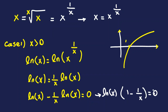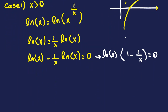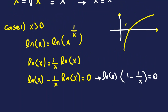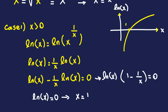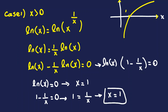We now have two cases: either ln x = 0, or (1 − 1/x) = 0. From the graph of ln, the only x where ln x = 0 is x = 1. For the second factor: 1 − 1/x = 0 gives 1 = 1/x, so multiplying both sides by x gives x = 1. Both give x = 1, and x is positive as required.